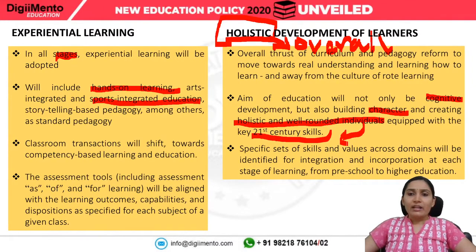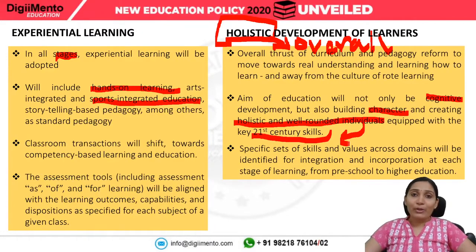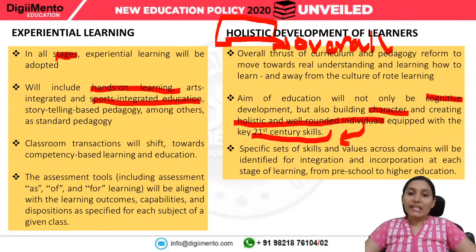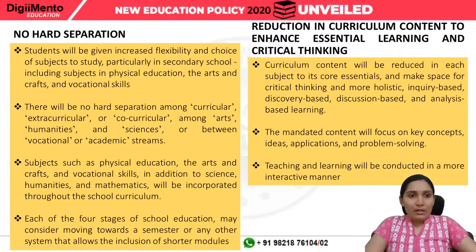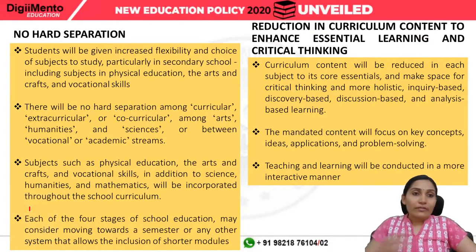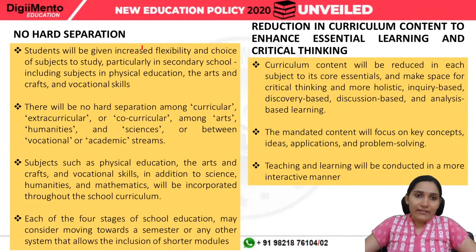A structural reform in education was very important to meet the demands of the industry. A specific set of skills and values across domains will be identified for integration and incorporation at each stage of learning. Students will be given increased flexibility and choice of subjects, particularly at the secondary level — that is from class 9 to 12.